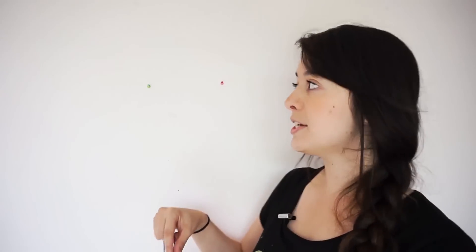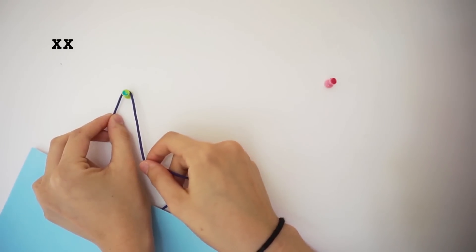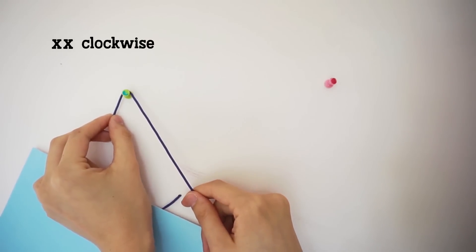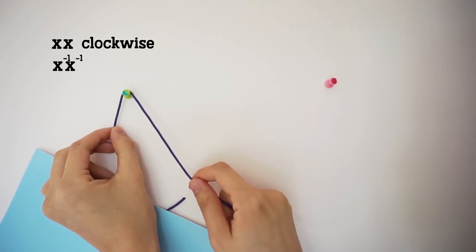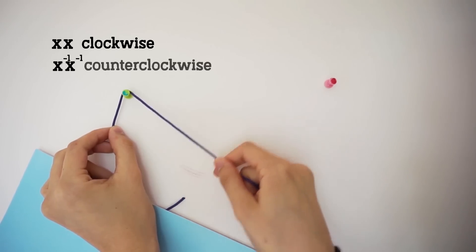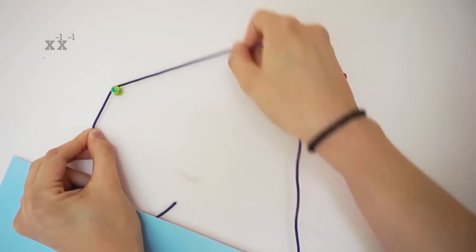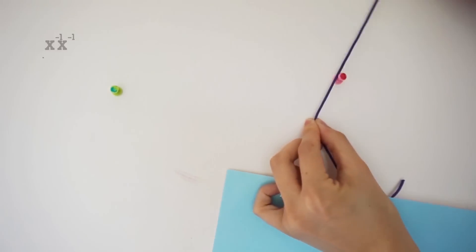So here we're going to say that a double x corresponds to wrapping around a pin clockwise. And a double inverse x corresponds to undoing that move, which would just be wrapping around a pin counterclockwise. So double x, double inverse x, double y, double inverse y.